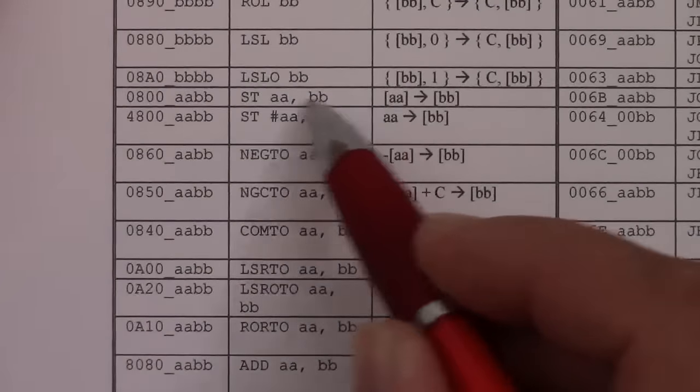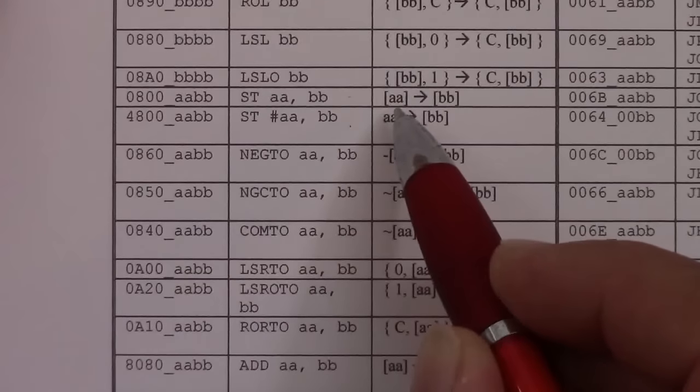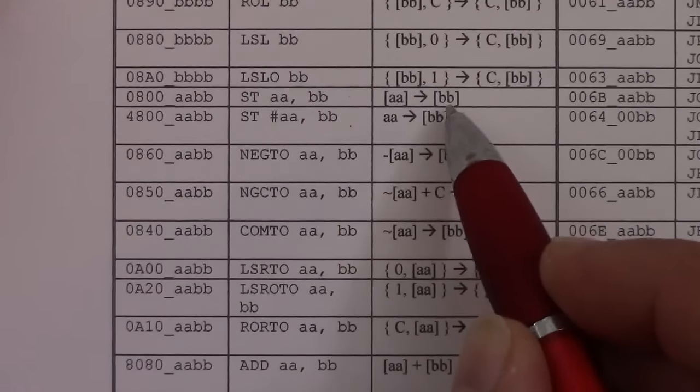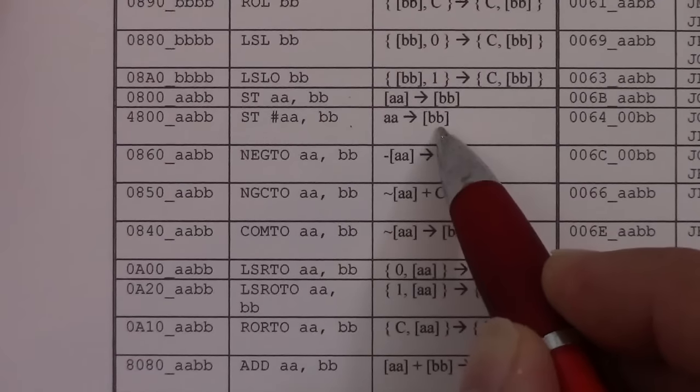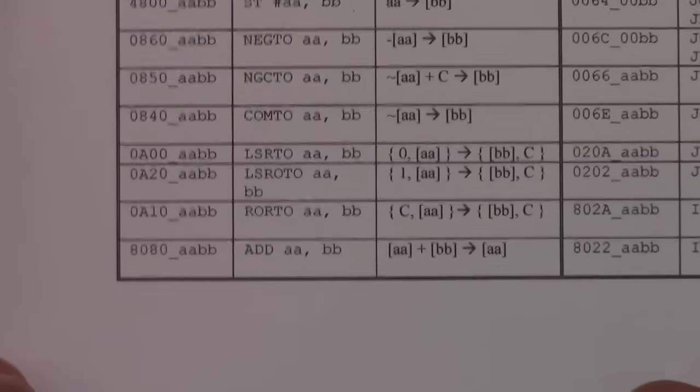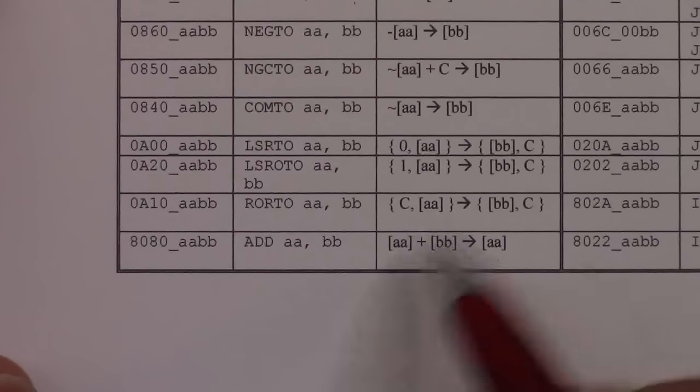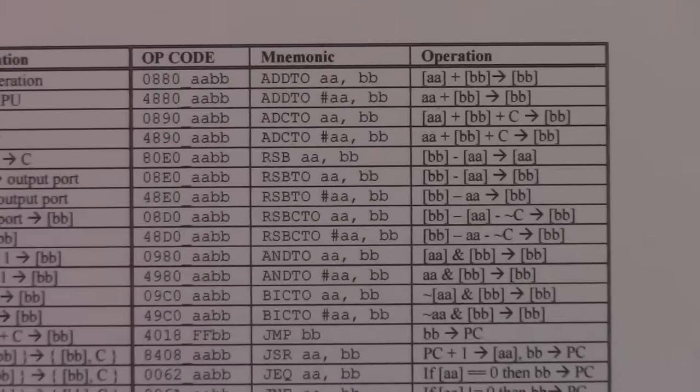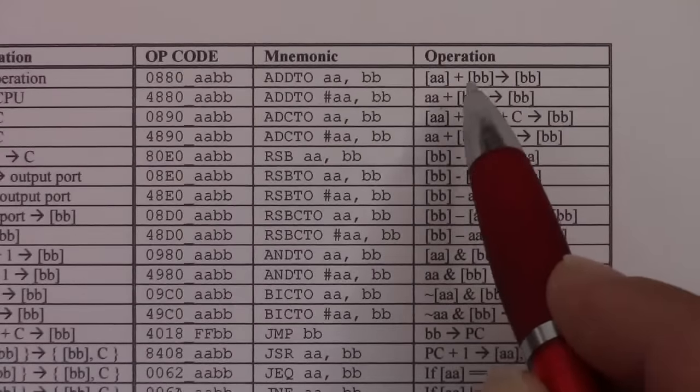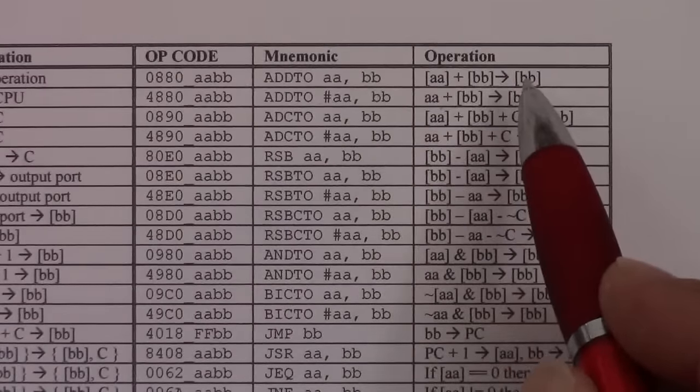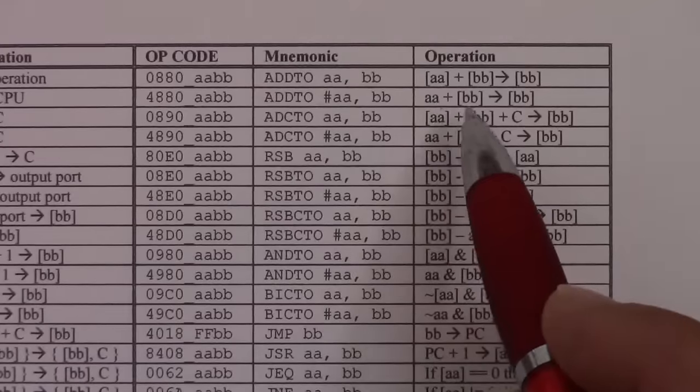So we have the store instruction. Store means we take, we copy one memory location to another memory location. Or we store immediate. This means we copy what's in the operand field of the instruction directly into a memory location. What else do we have? Add, add the two arguments and save the result on the left side. We also have add two, which is the same as add, except we store the result in the right side. So you think of this as add the left side to the right side, store the result in the right side. Add two with an immediate, so you can add a constant to a memory location.